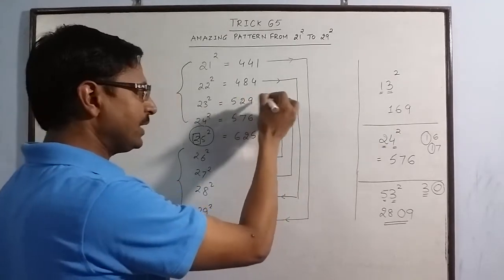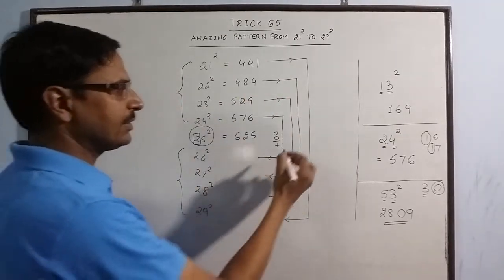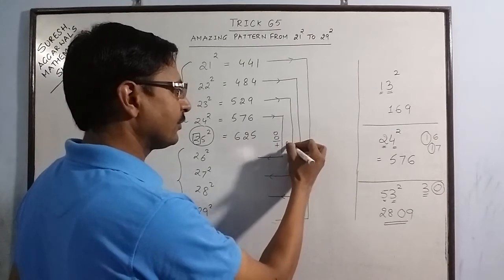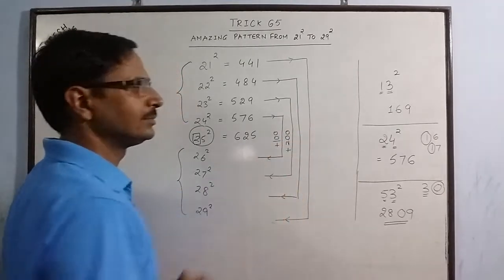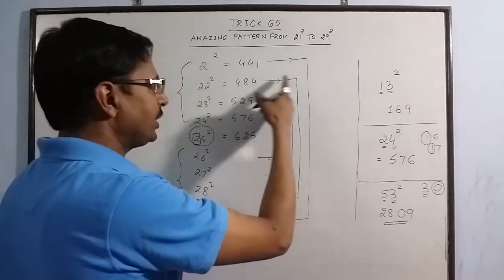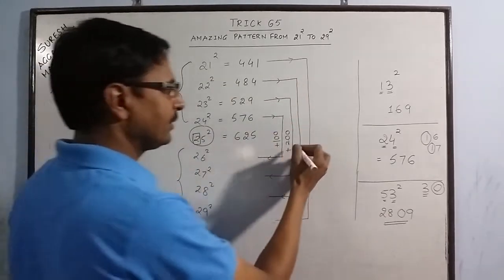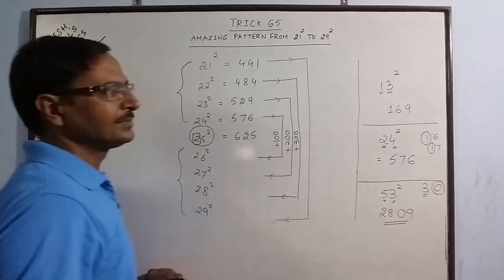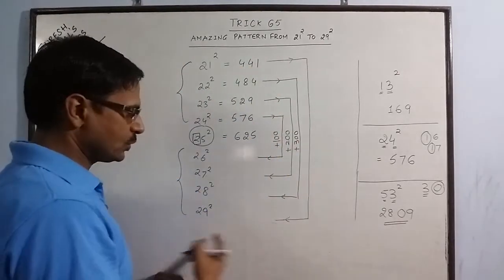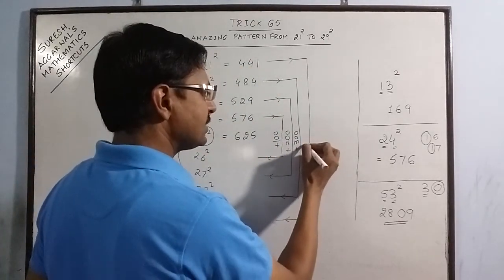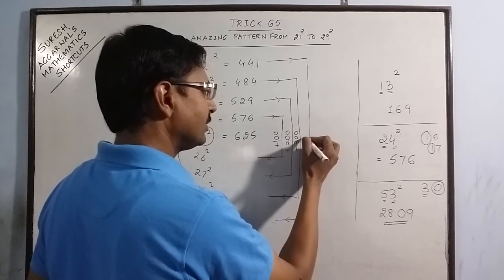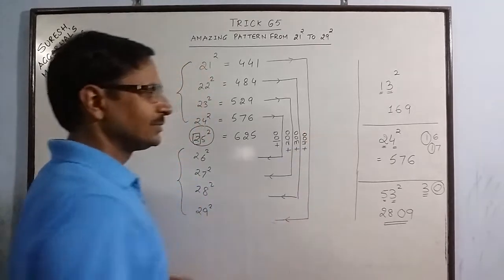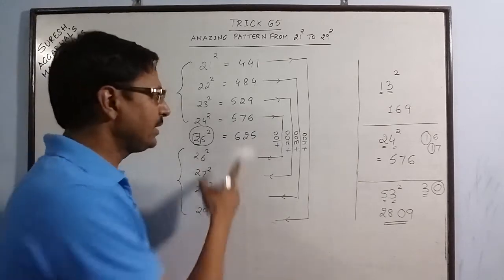From 529 to the square of 27 there is an increase of 200. From 22 to 28 there is an increase of 300. And from 21 to 29 there is an increase of 400. So we can now find these squares orally.